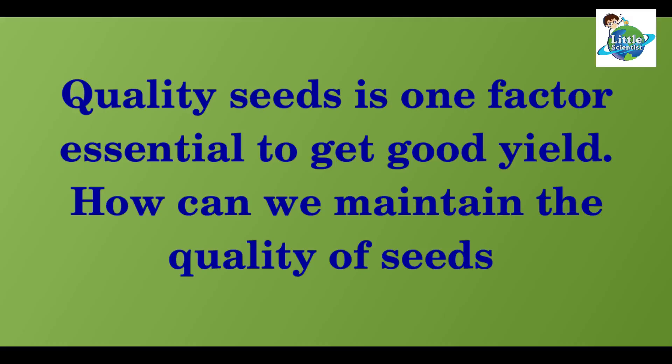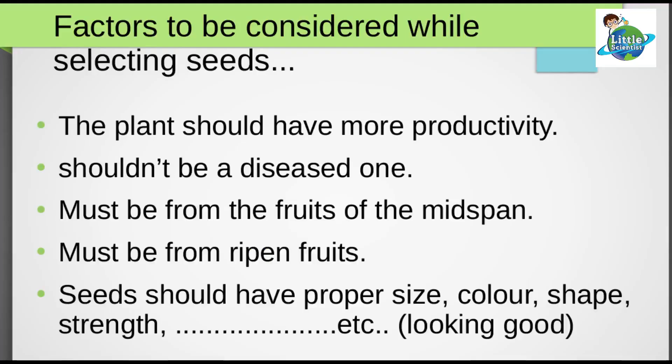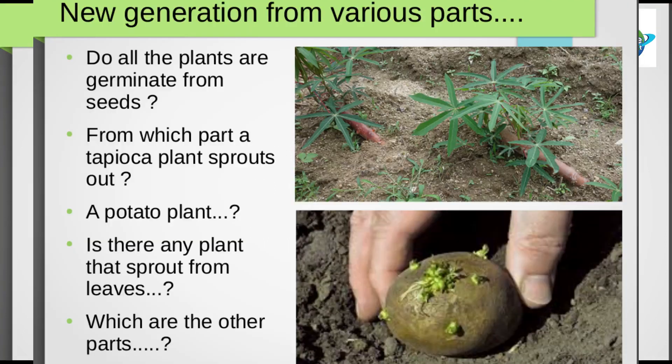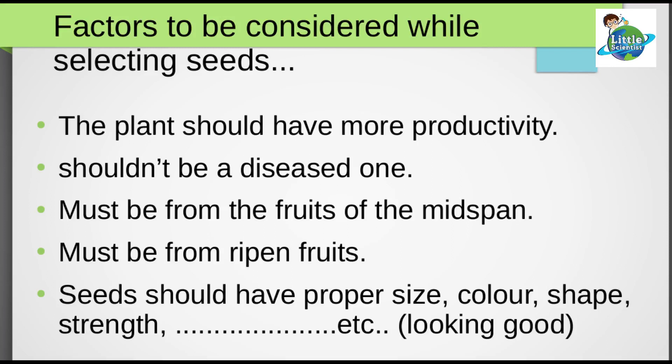Here we can consider so many factors while selecting seeds: 1. The plant should have more productivity. 2. The plant shouldn't be a diseased one. 3. Must be from the fruits of the mid-span. 4. Must be from ripened fruits also. 5. Seeds should have proper size, color, shape, and strength.